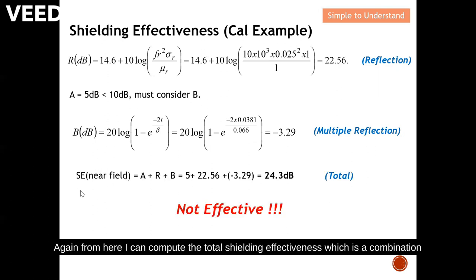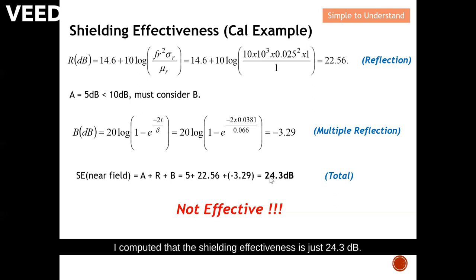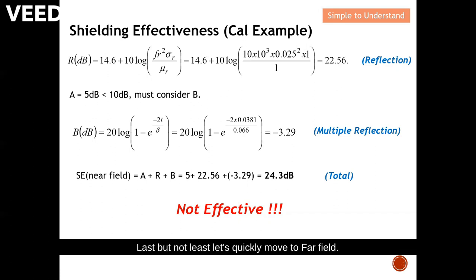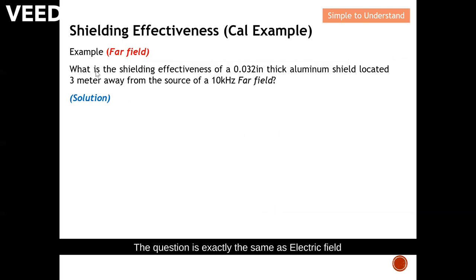The total shielding effectiveness is the combination of A, R, and the B-term: absorption 5 dB, reflection 22.56 dB, and B-term minus 3.29 dB, giving a total shielding effectiveness of 24.3 dB. Hence, if your source of interference is magnetic field, you will have a bigger challenge — the shield is not very effective at just 20-something dB.